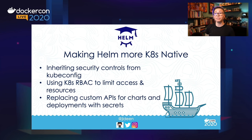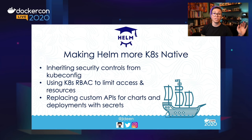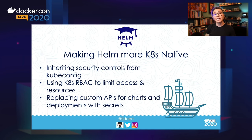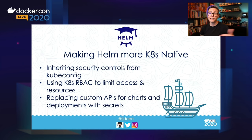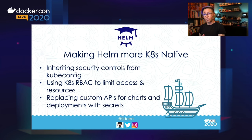Helm 3 inherits security controls directly from kubeconfig, so you don't have to set up a service account and do `helm init`. Helm init is actually gone. You don't have to worry about cluster role bindings and creating an account or a special namespace for Tiller. Instead, you can use Kubernetes RBAC to limit access and resources. Whatever access your system or build system has to the Kubernetes cluster — production, dev, test, QA — that's going to be the same level of access that Helm has. We also opted to replace custom APIs for charts and deployments with secrets, and we'll talk about secrets in a few more slides.